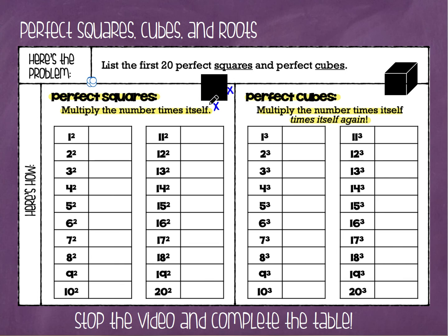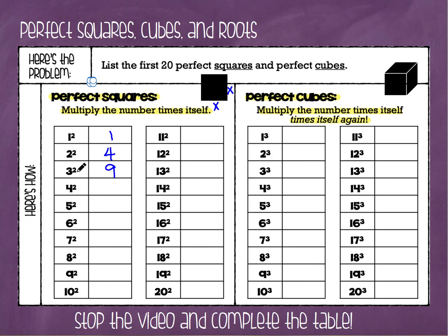If I have a square with a side length of 1, this side is also 1, and 1 times 1 is 1, so 1 is a perfect square. A side length of 2 gives 2 times 2 equals 4, so 4 is a perfect square. Side length of 3 gives 3 times 3 equals 9. Side length of 4 gives 4 times 4 equals 16. The first four perfect squares are 1, 4, 9, and 16. Make sure not to multiply the base by the exponent — 3 times 2 is not 6, it's 9.